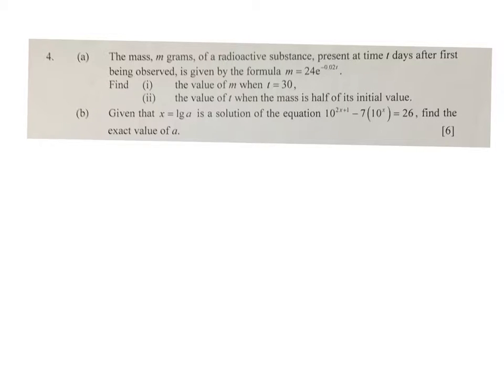The mass m grams of a radioactive substance present at time t days after first being observed is given by the formula m equals 24e to the power negative 0.02t.